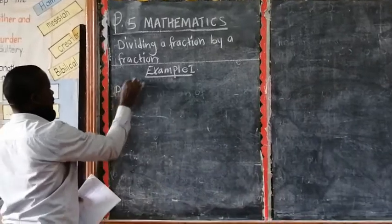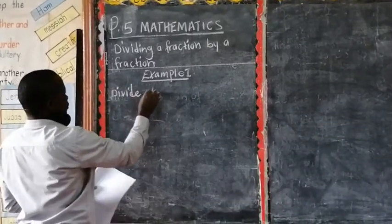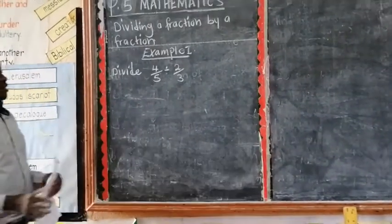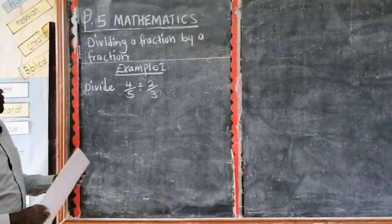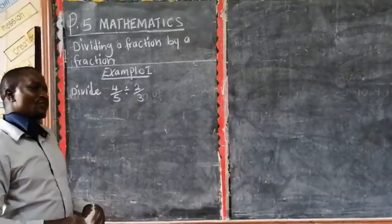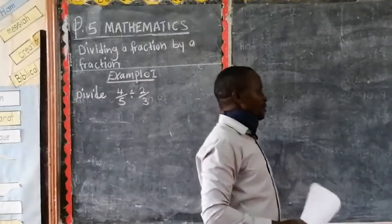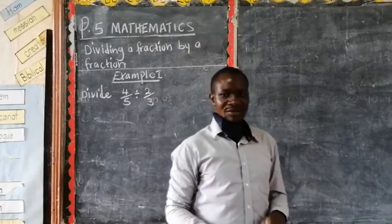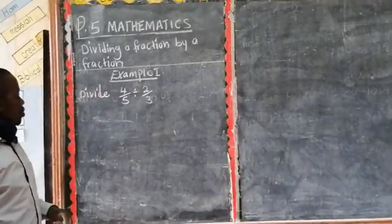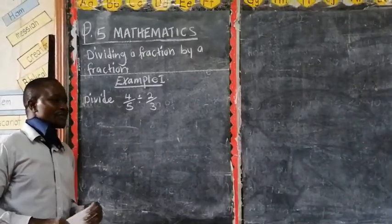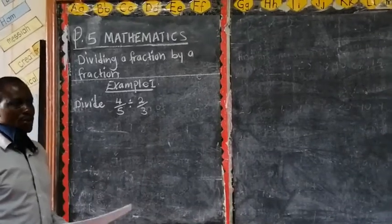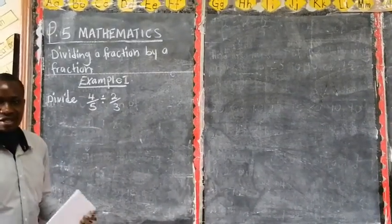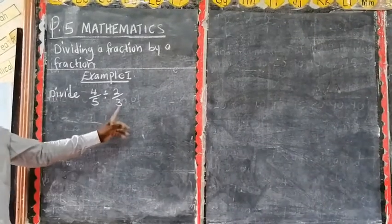And it says divide 4 out of 5 divided by 2 out of 3. So before that, before you look at the division of a fraction by a whole number, we had to talk about reciprocal. And we said that reciprocal simply means you get the number which is down, you put it up, and the number which is up comes down. So even here, this is what we are going to do. We are going to divide this fraction by a fraction by using the idea of reciprocal. When you are dividing a fraction by a fraction, this division sign changes to multiplication sign. And once it changes, you find the reciprocal of this last key fraction.